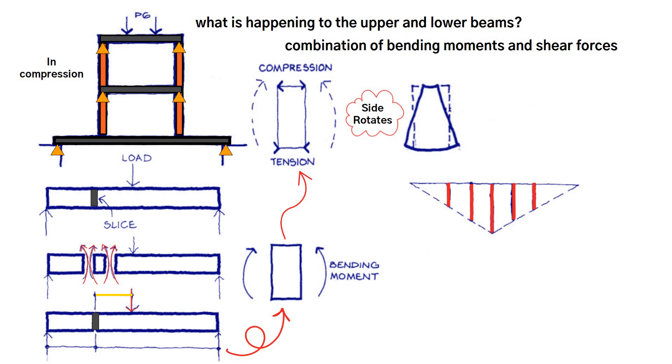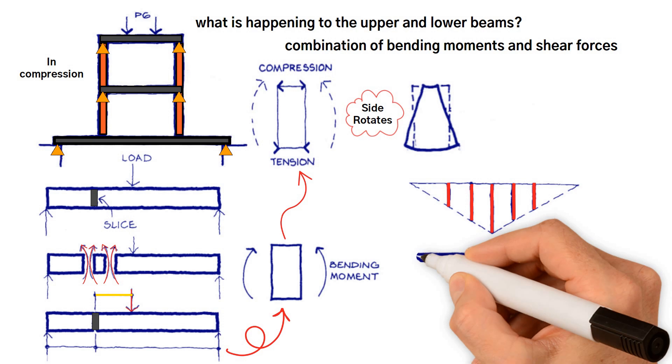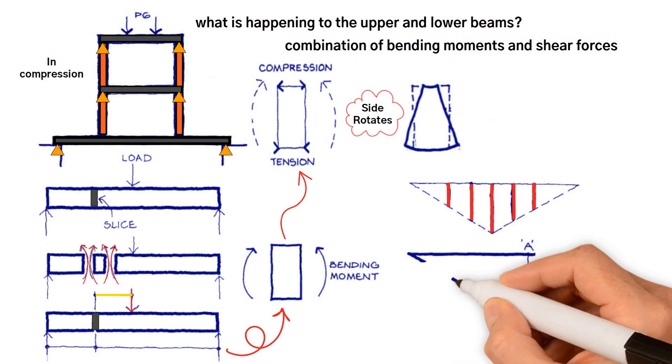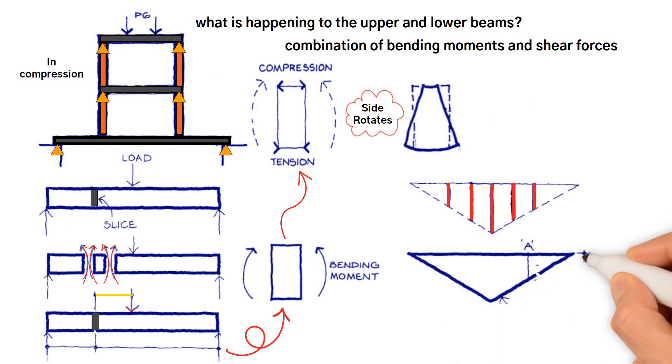Because there is a bending moment at every slice, and the beam is made of slices, there is a bending moment at every point of the beam. A clearer picture of the bending moments on the beam can be obtained by joining the ends of all the bending moment size lines. This diagram is called a bending moment diagram.